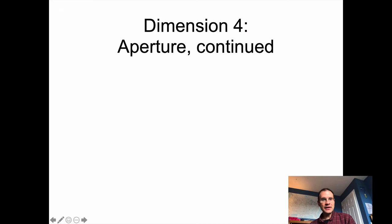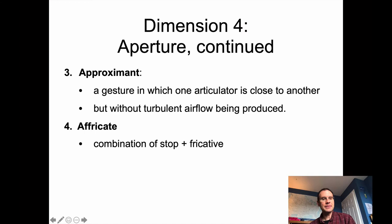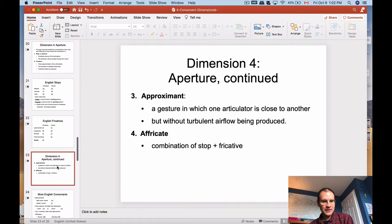You can also combine the first two into what's called an affricate — a stop followed by a fricative. You get complete cessation of airflow, then a narrow opening giving turbulent airflow on top of that. That gives you an affricate like 'cha' or 'ja.' It's a mixture rather than a pure point on the continuum, but it's still an option in the aperture dimension of consonant articulation.